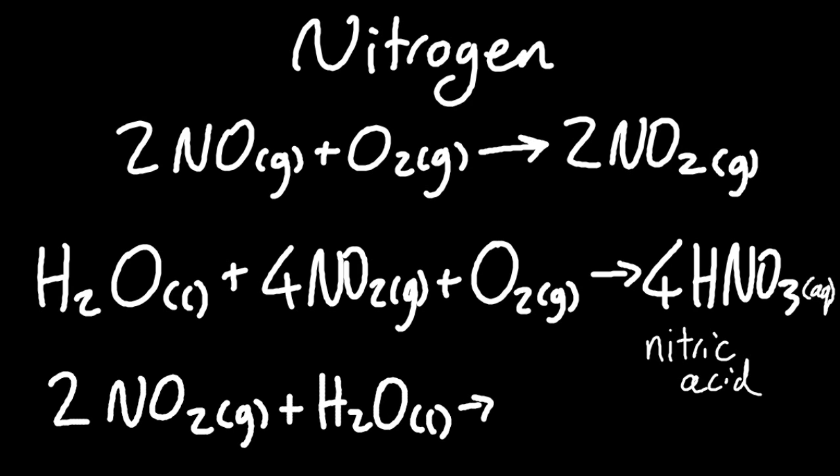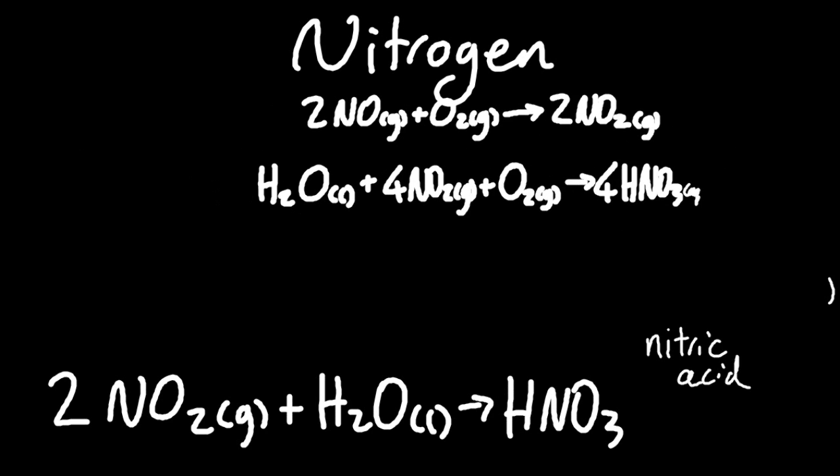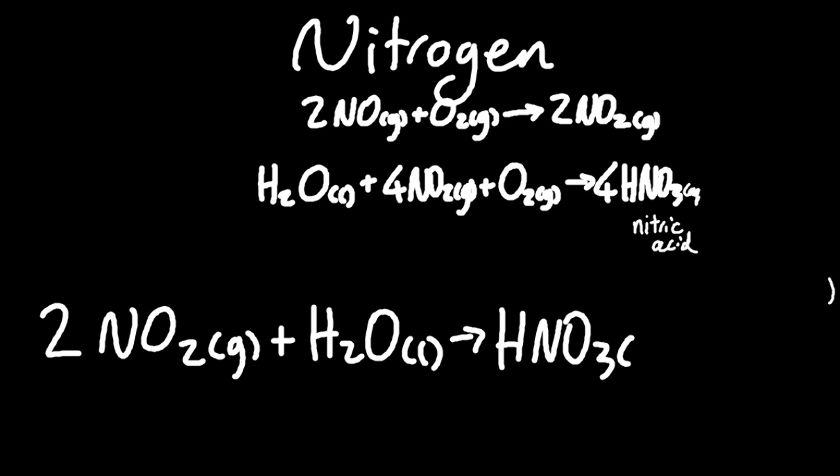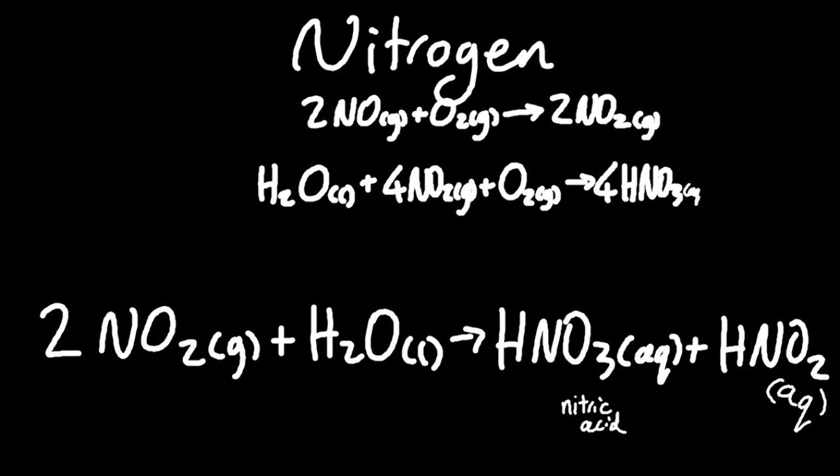Another reaction that it seems that you need to know to form nitric acid is a couple of nitrogen dioxides and water will make nitric acid and nitrous acid. HNO2 is nitrous acid, one less oxygen. Yes, I know there's a lot of equations. No one knows specifically which ones you actually have to learn—it's a new course, isn't it?